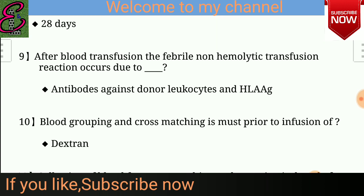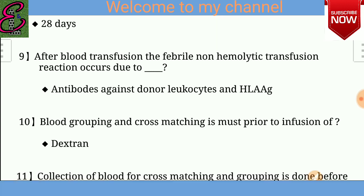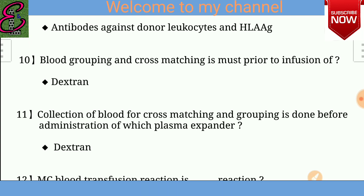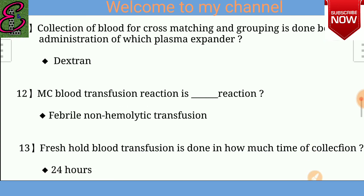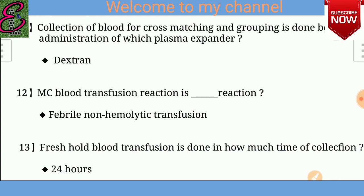Question number ten: Blood grouping and cross-matching is done prior to infusion of which substance? Answer is dextran. Question number eleven: Collection of blood for cross-matching and grouping is done before administration of which plasma expander? Answer is dextran.